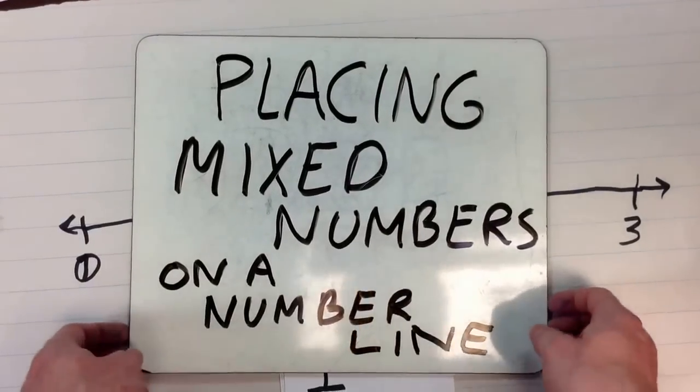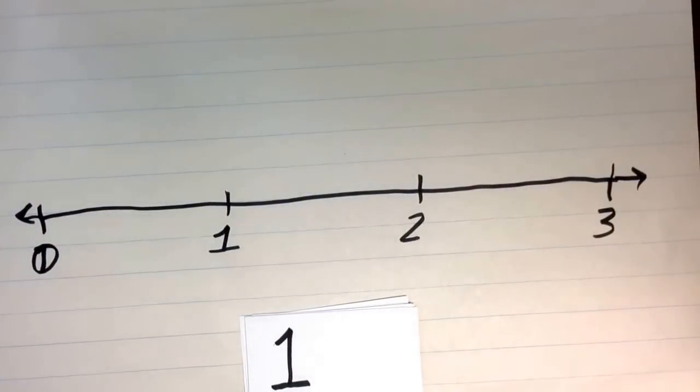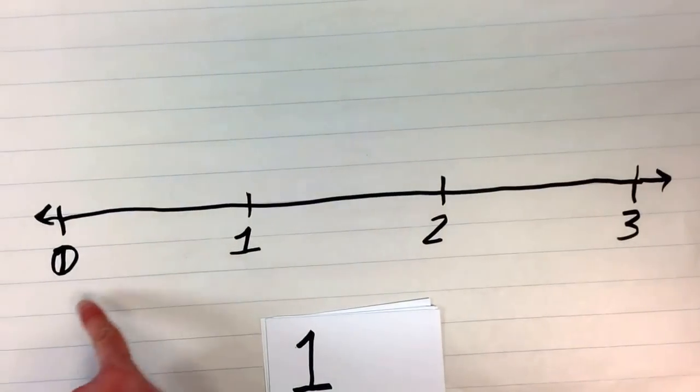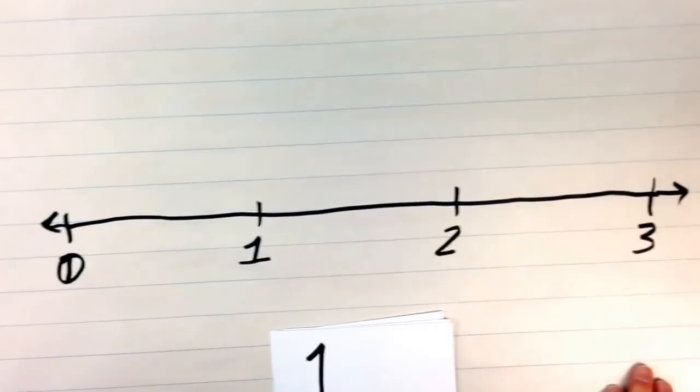So as you can see underneath here, I have my number line, and my number line only goes from 0 to 3.